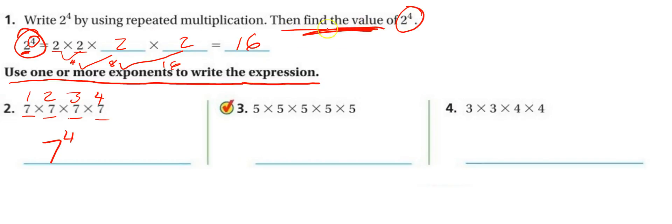On this problem it said find the value, but now they're not asking for that. Okay, here's our next one. The number that's repeated is 5. So that's our base. How many times is 5 repeated? 1, 2, 3, 4, 5 times. So 5 is our exponent. And that's it.